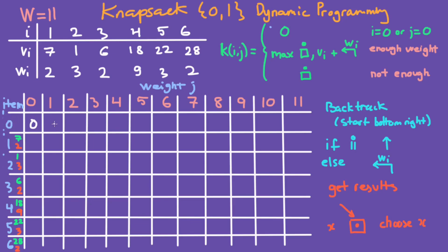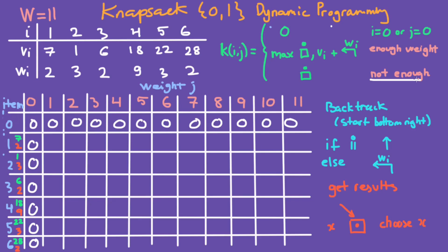So row 0 we fill in all zeros, and column 0 we fill in zeros as well. Here the total weight is 1 and the item weight is 2, so we cannot select this item. This falls into the 'not enough weight' category. In that case, just take the number at the top and put it in the box. The number at the top is 0, so we put in 0.